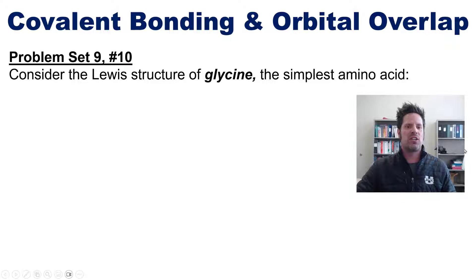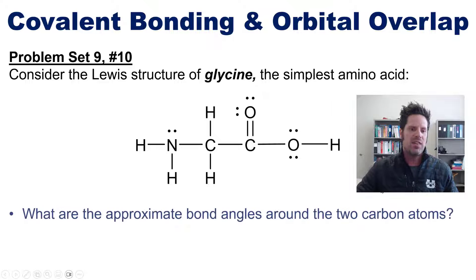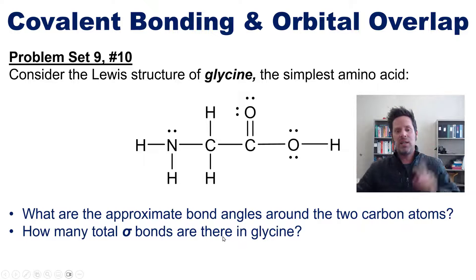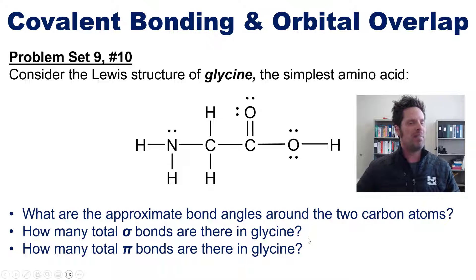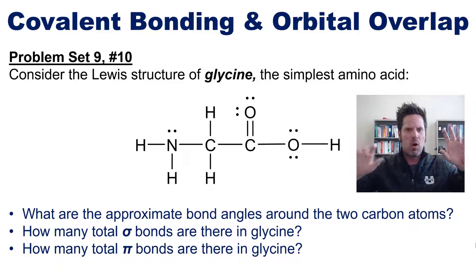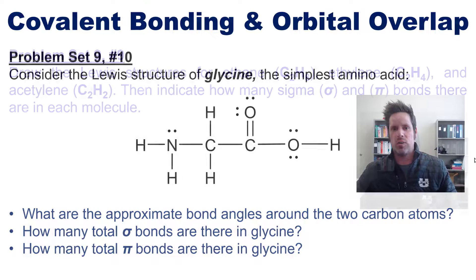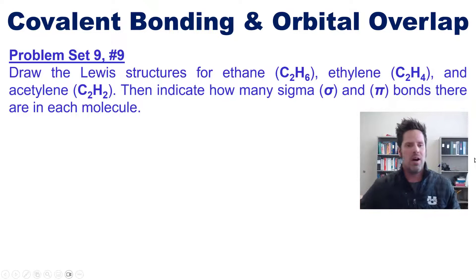I want you to consider the Lewis structure of glycine shown right here. Then tell me, what are the approximate bond angles around its two carbon atoms? And separately, how many total sigma bonds are there across the entire molecule, and how many total pi bonds are there? Now just so you know, I'm not going to do this question for you, but I have a link in the description below or possibly floating over my head as an in-video link to a separate video in which I will show you how to do it.